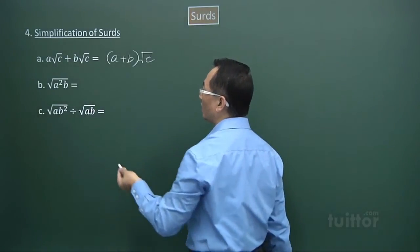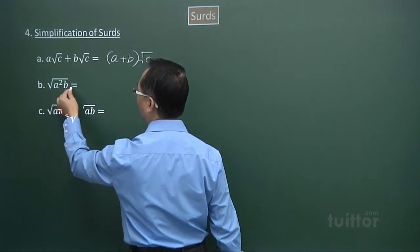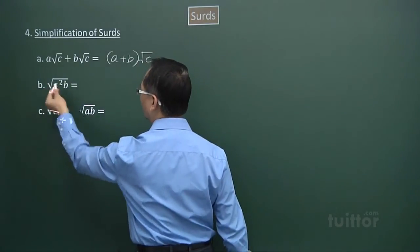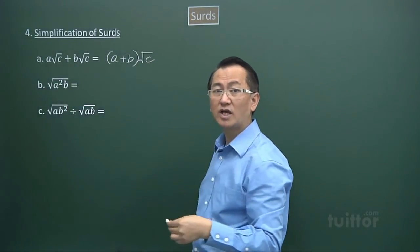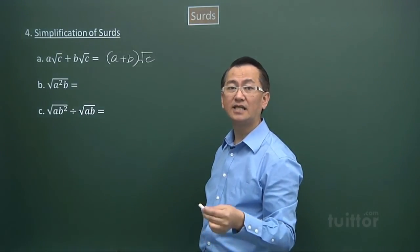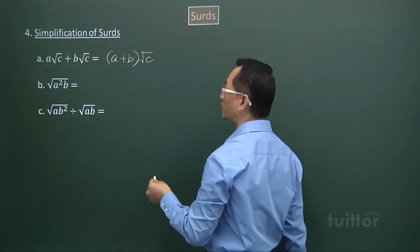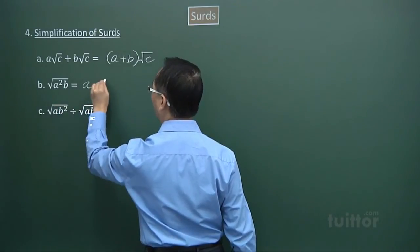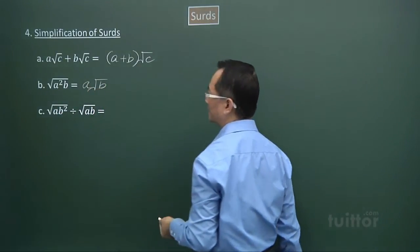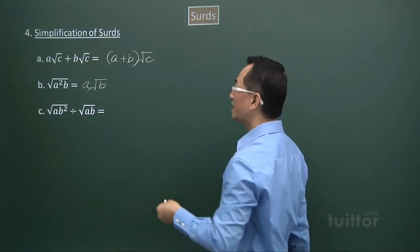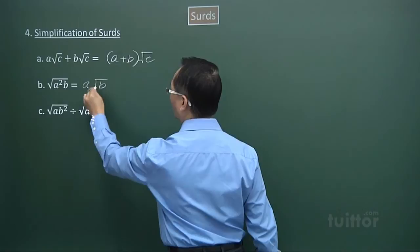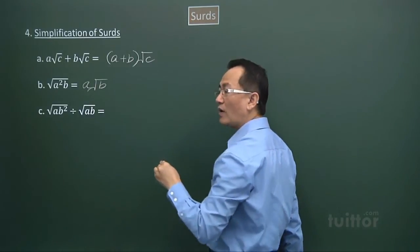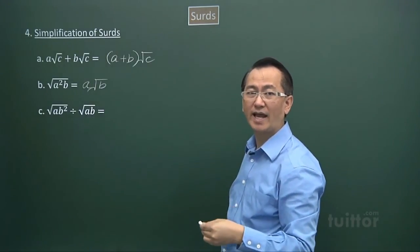Whenever we have an expression we can simplify further — for example a squared under a square root — squaring and square-rooting cancel, giving a. We are dealing with perfect squares inside the square root, so we extract those. Square root of a squared is a, but the remaining part, square root b, stays as it is. The goal is to ensure whatever remains under the square root has no perfect square factors.